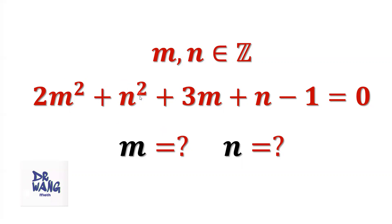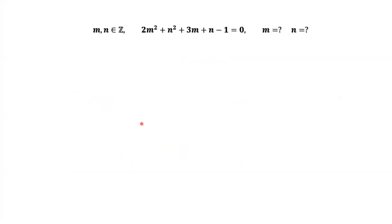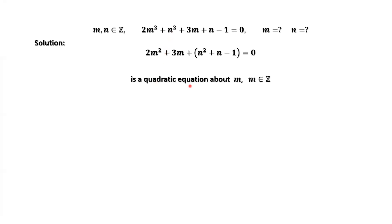This is a quadratic equation containing two variables, m and n. We rewrite this given equation and consider it as a quadratic equation about m only, where m is an integer. The part n² + n - 1 can be considered as a constant.